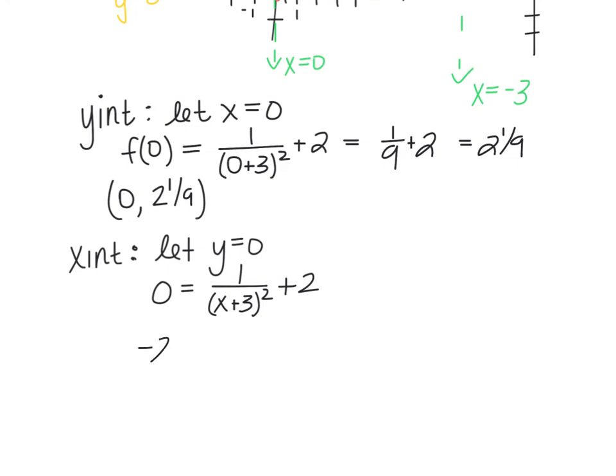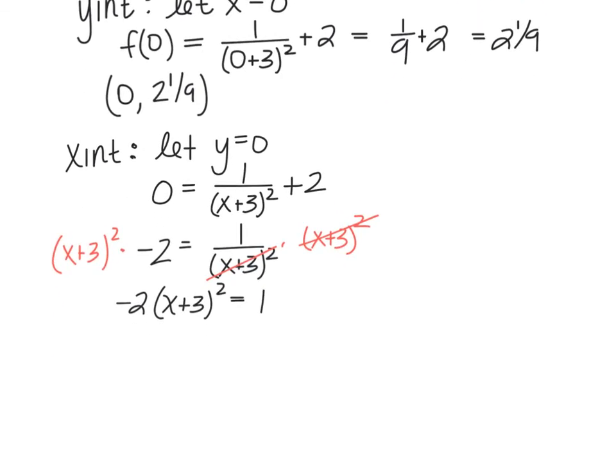We would subtract 2 from both sides, and then we would want to undo the division by multiplying both sides by the quantity that's in the denominator, which is the (x plus 3) squared. So those are going to divide out, and then I have to multiply the left-hand side of the equation also by the (x plus 3) squared. So now I have -2 times the quantity (x plus 3) squared equals 1. Then I need to isolate the (x plus 3) squared, so I'll divide both sides by -2, which gives us (x plus 3) squared equals -1/2.